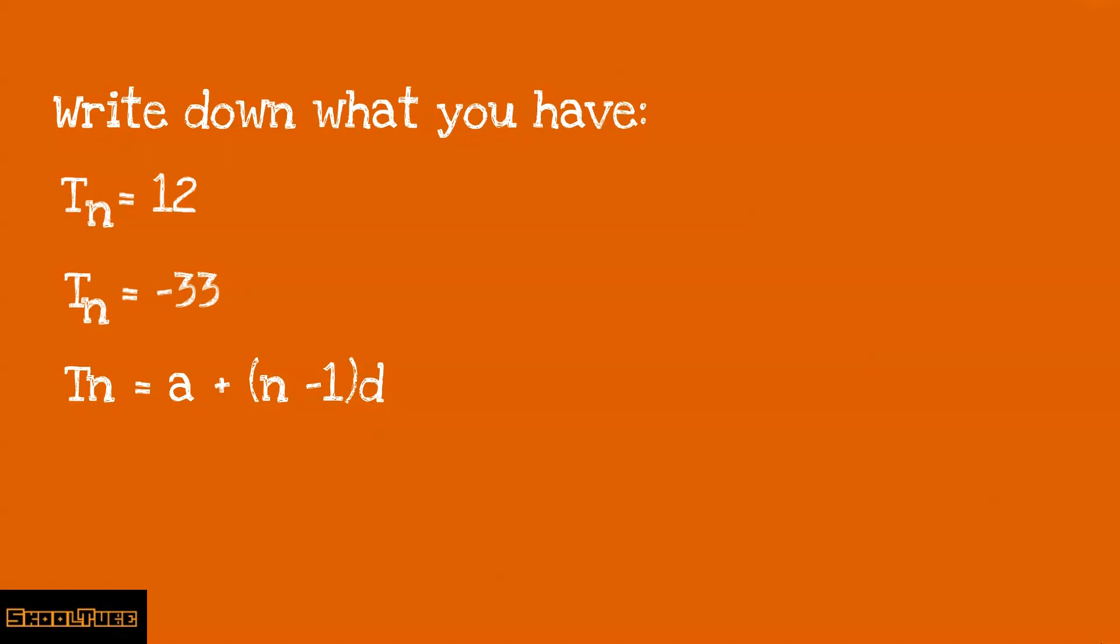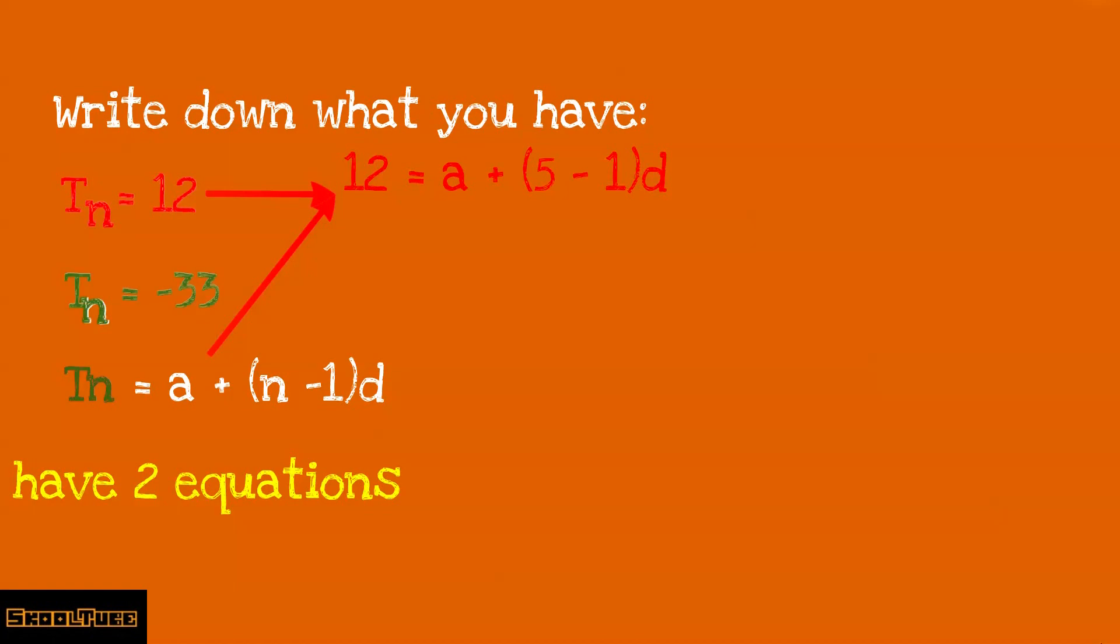Now guys, the only thing that's different about this question is that you're going to end up having two equations because you are given two values for Tn. When Tn equals 12, your equation will be 12 equals a plus (5 minus 1)d. And when Tn equals minus 33, the equation will be minus 33 equals a plus (14 minus 1)d. When we simplify these two equations further, we get 12 equals a plus 4d and minus 33 equals a plus 13d.